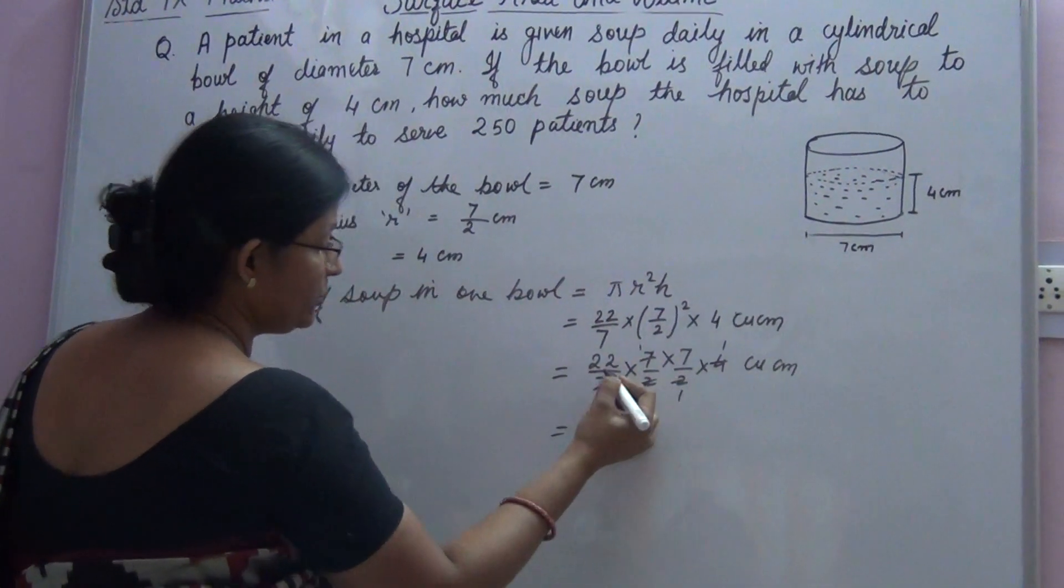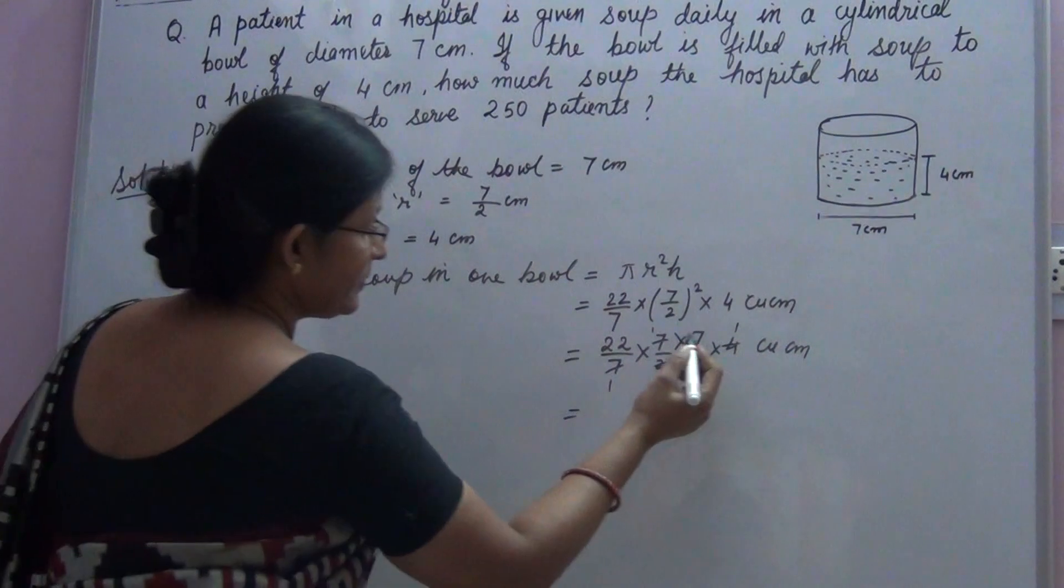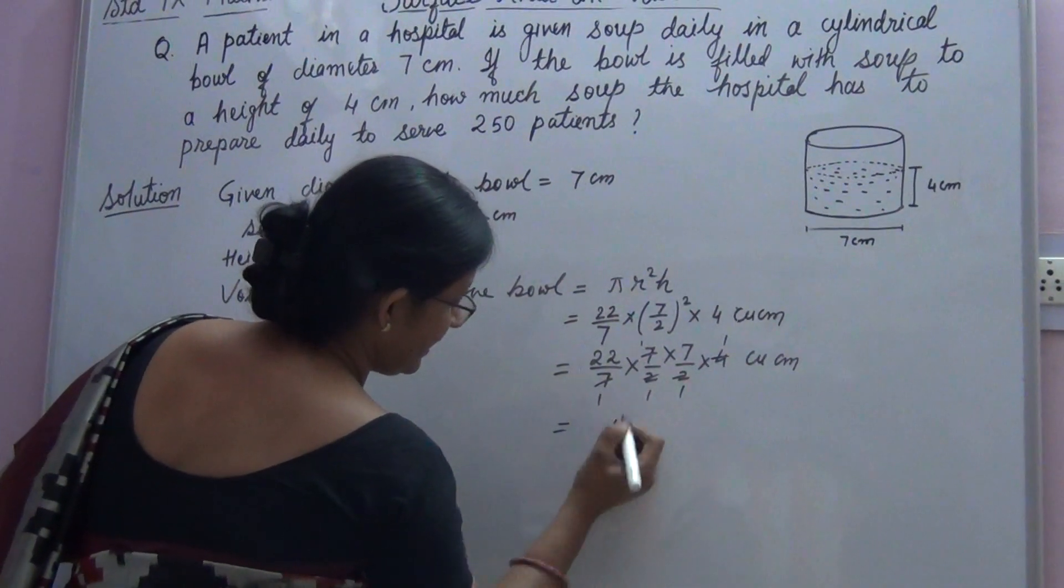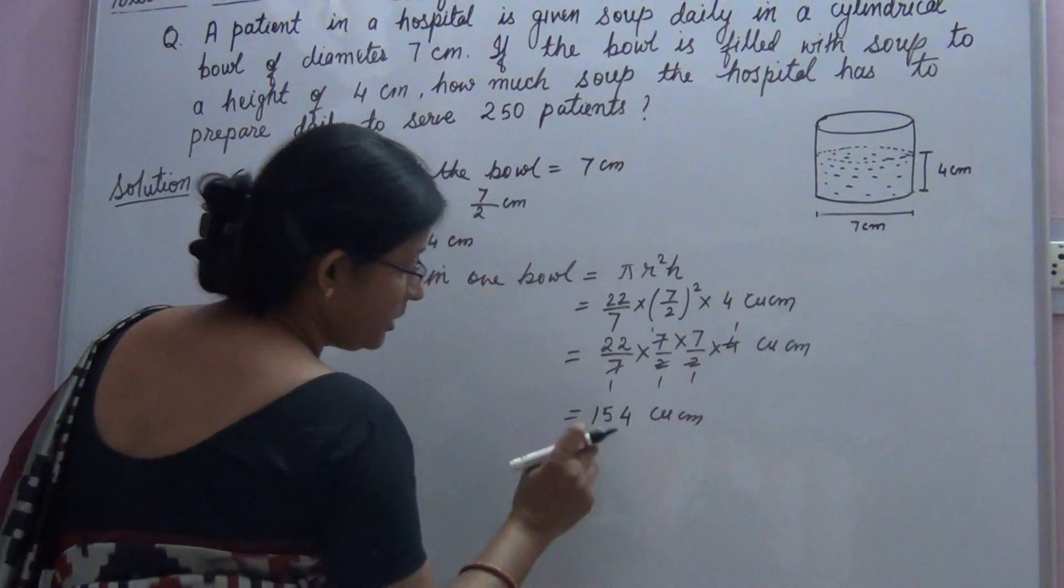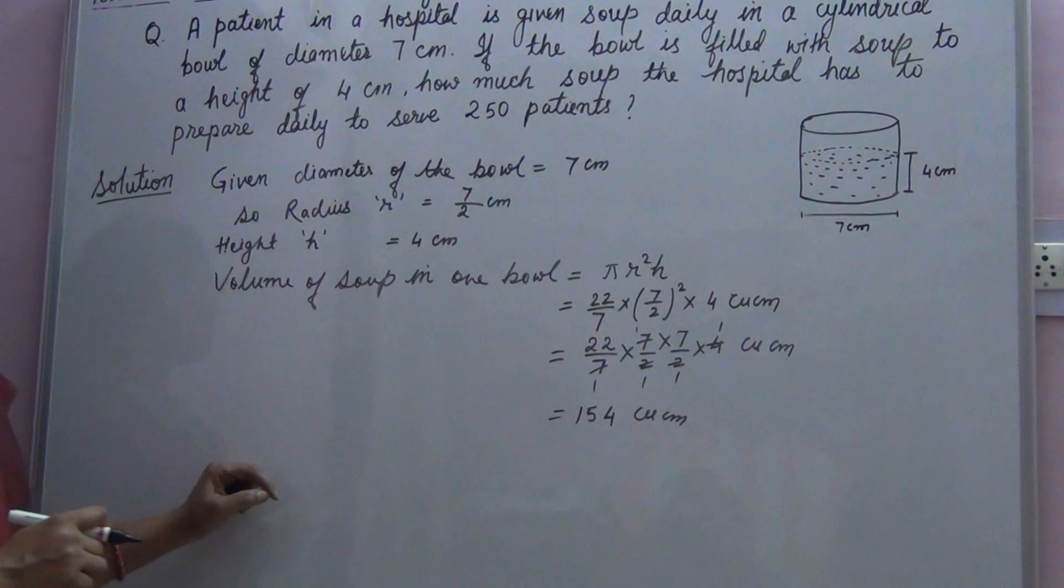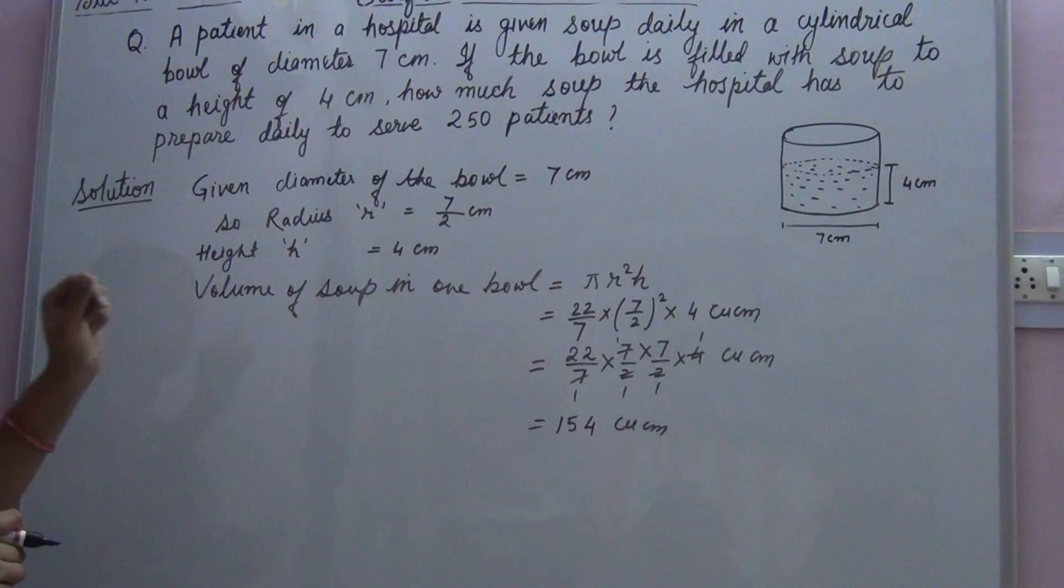Now we are left with 7 into 22. That is equal to 154 cubic cm. So 154 cubic cm is the volume of soup in one bowl.